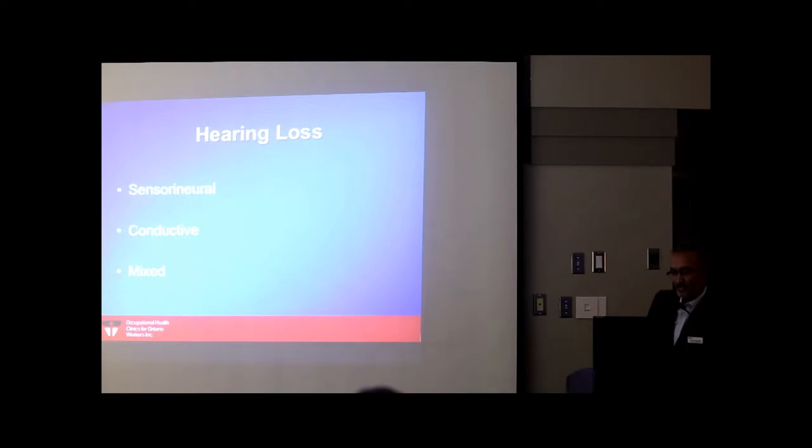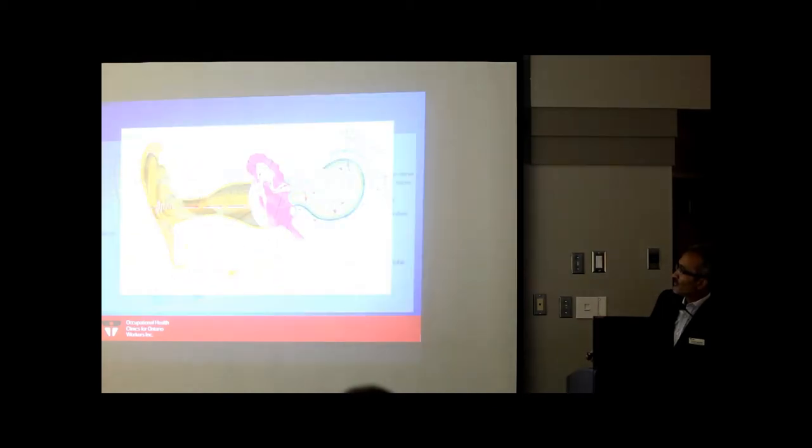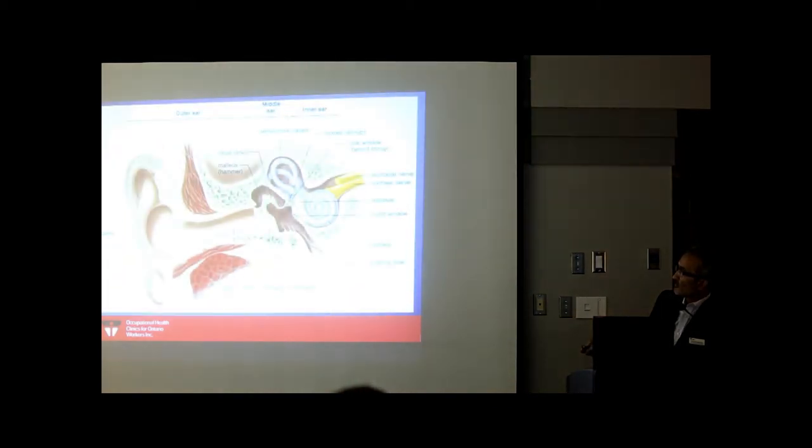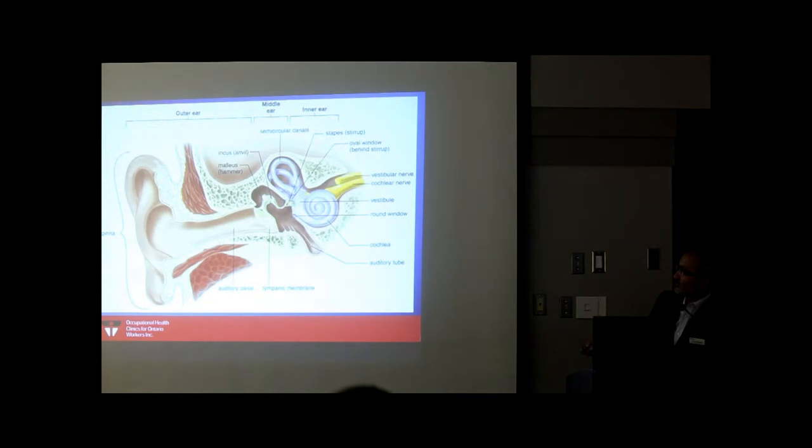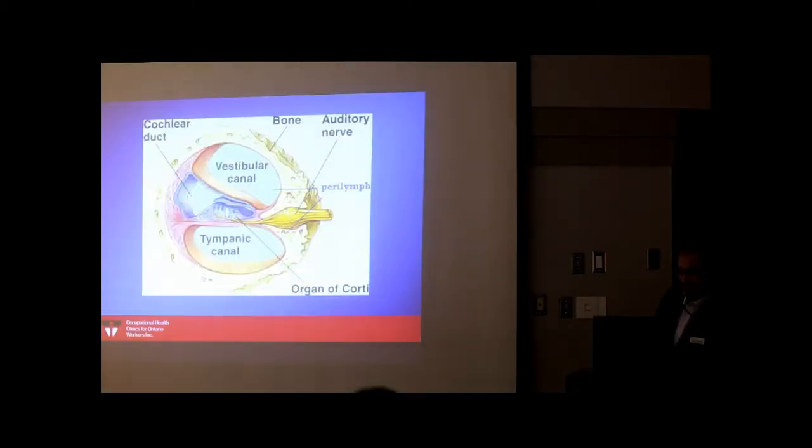So there's three types of hearing loss: sensory neural, conductive, and mixed. Conductive hearing loss involves the first two parts of the ears, there's a problem with transmission. Sensory neural is in the sensory part of the ear, in the inner ear. And mixed affects both parts of the ear.